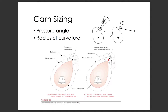What we've talked about so far is how to make position, velocity, acceleration, and jerk graphs — what's acceptable for that, what's not — and the mathematical functions to connect the dots between the dwells in our timing diagrams. So mainly what we're going to talk about now is how to size the base circle radius for cams.